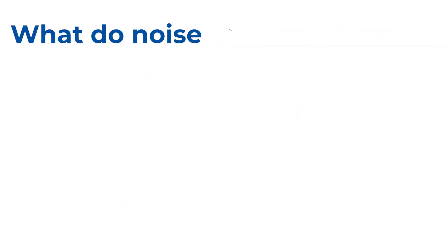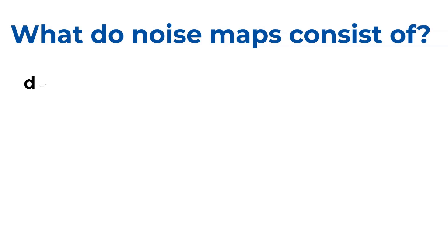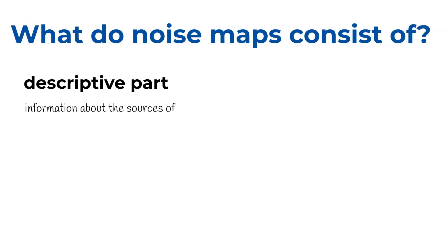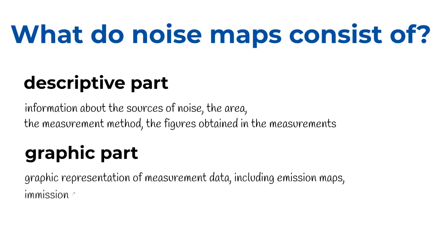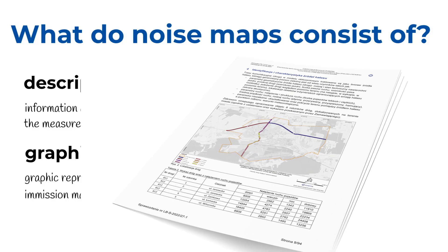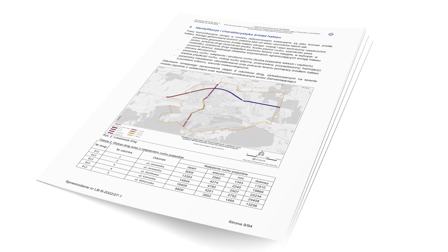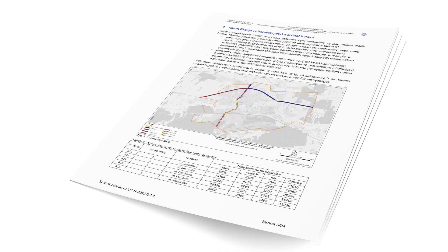What do noise maps consist of? It is necessary that they consist of a descriptive part and a graphic part. The descriptive part includes information about the sources of noise, the area, the measurement method, and the figures obtained in the measurements. The final summary of the descriptive part also includes an analysis of the measurements made and, in particular, determines the noise-prone areas, how large a percentage of the population is exposed to noise in the area, and what is the distribution of noise.